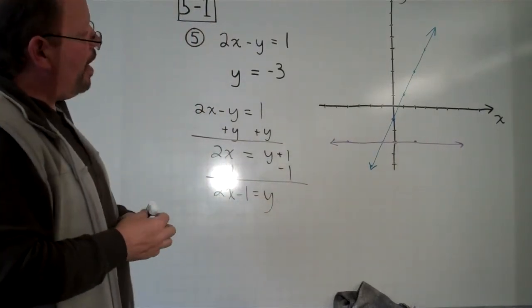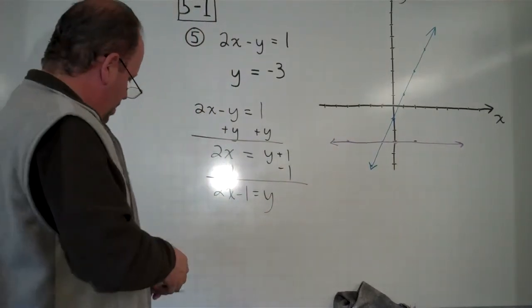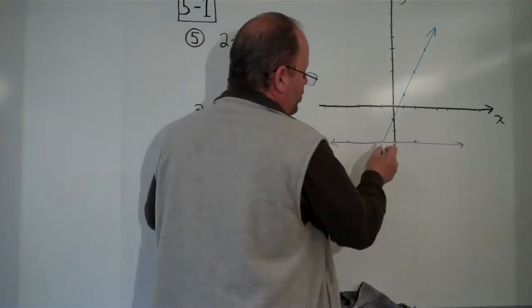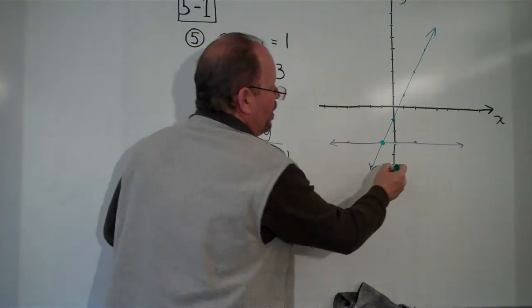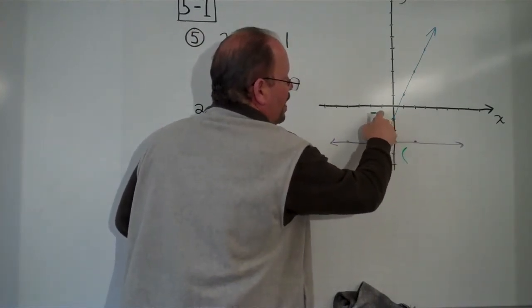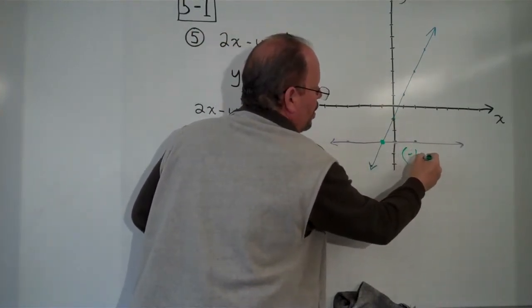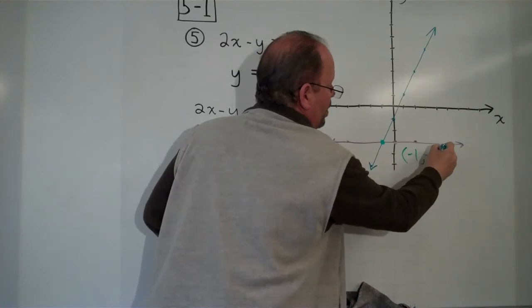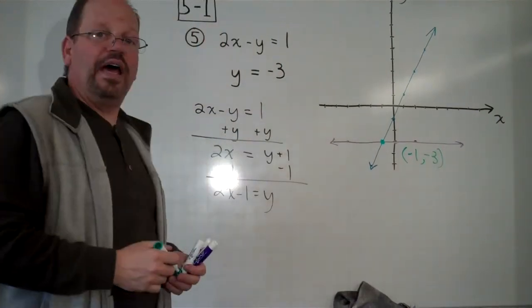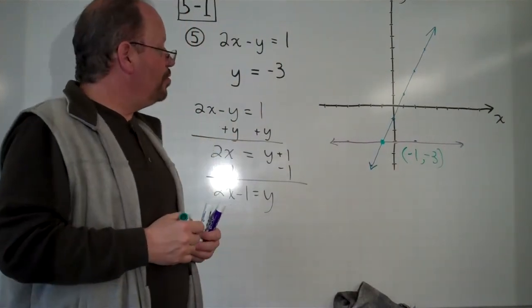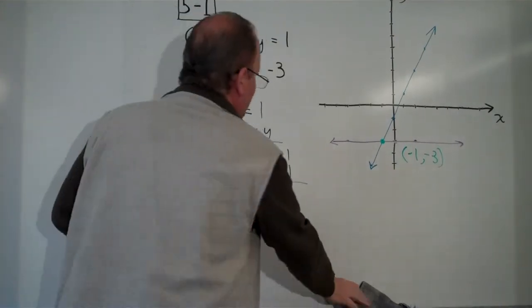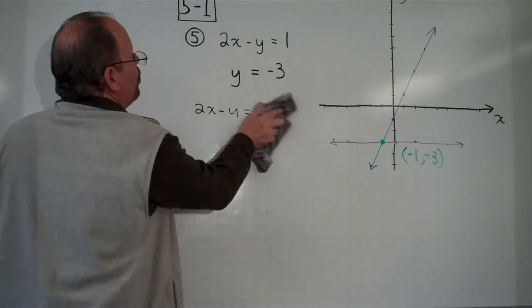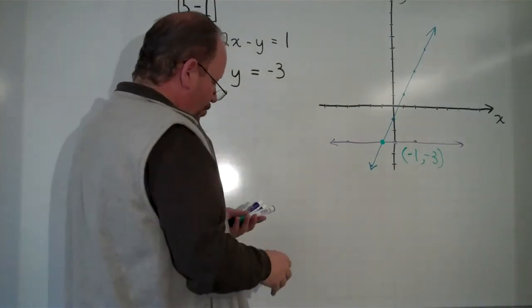And when we graph the two lines, this point where they intersect is our solution. And that point is at negative 1, comma negative 3. That is the solution to this equation. Now for 5-2, we learn to solve this without graphing.